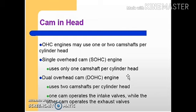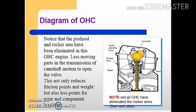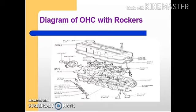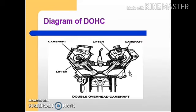The cam-in-head type: an overhead cam engine may use one or two camshafts per cylinder head. A single overhead cam engine uses only one camshaft per cylinder head, while a dual overhead cam engine uses one camshaft for the intake valves and another for the exhaust valves. In this overhead cam engine, the push-rods and rocker arms have been eliminated. This reduces friction points, weight, and wear points, improving overall efficiency. This is a double overhead camshaft engine.